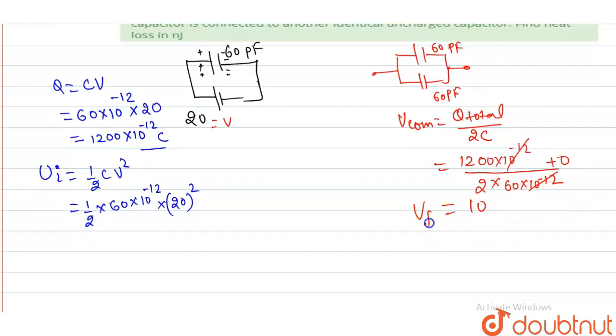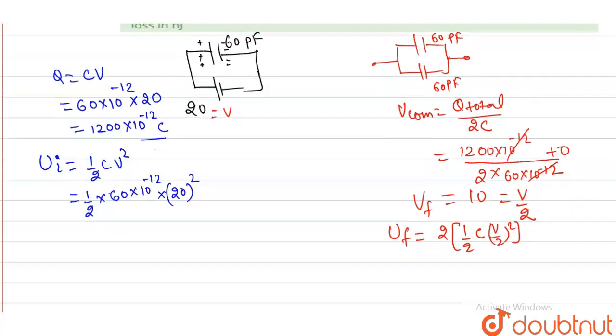It means V final I can write it as V by 2, and U final is what? Twice of half C(V/2)² squared. Now what do we have to find? Change in